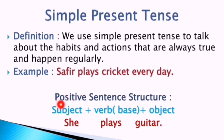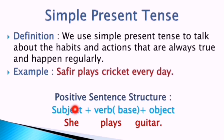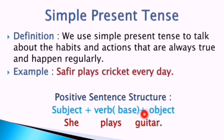For the positive sentence structure, we need a subject, a verb in its base form, and an object. For example, with subject 'she' and verb 'play,' we add S because 'she' is third person singular number — so the verb becomes 'plays.' Sometimes you need to add 'es' — it depends on the subject. The object is 'guitar,' so the sentence is: 'She plays guitar.'